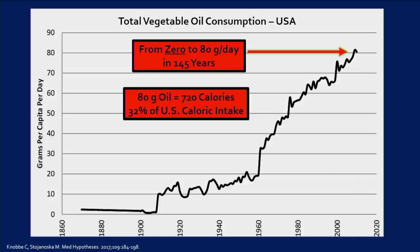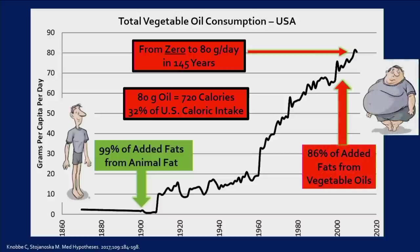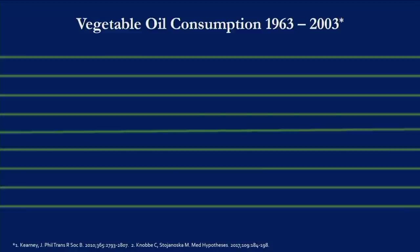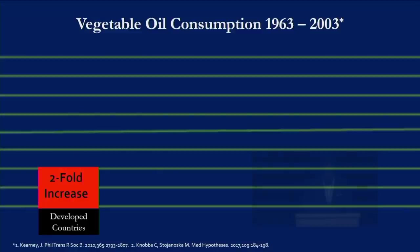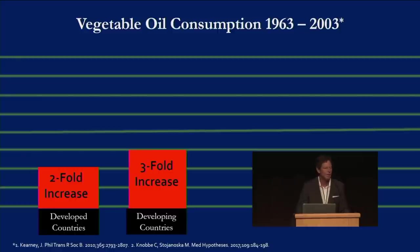This makes vegetable oil consumption the single greatest change to nutrition in all of history, and we haven't even talked about the toxicity. In 1900, 99% of our added fats came from animal fat. By 2005, 86% of added fats came from vegetable oils, almost completely supplanting lard, butter, and beef tallow. And this happened worldwide: between 1963 and 2003, vegetable oil consumption doubled in developed countries and tripled in developing countries.